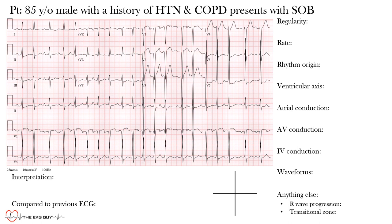First, what is the regularity of the rhythm? On first impression, the rhythm appears irregular — and that is correct. This is an irregularly irregular rhythm. We use the R-to-R interval, measuring from one R wave to the next. You can already see that these intervals are different, with no pattern to the variation, so we call it irregularly irregular.